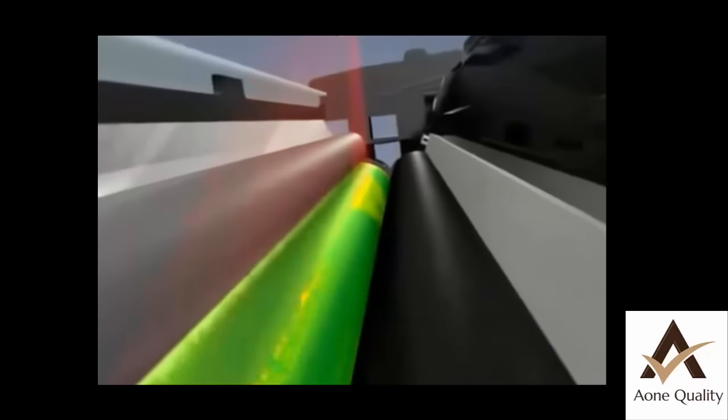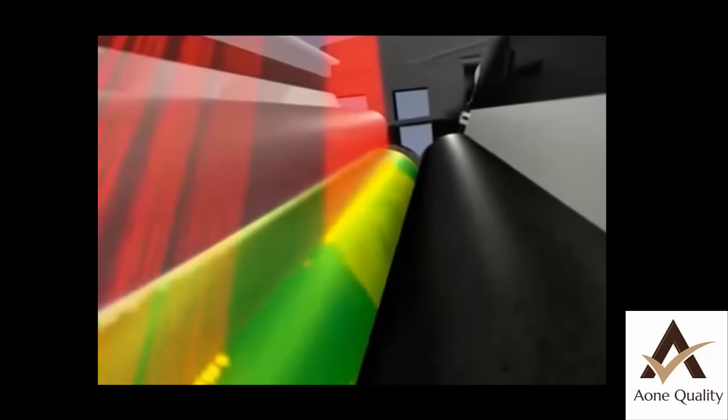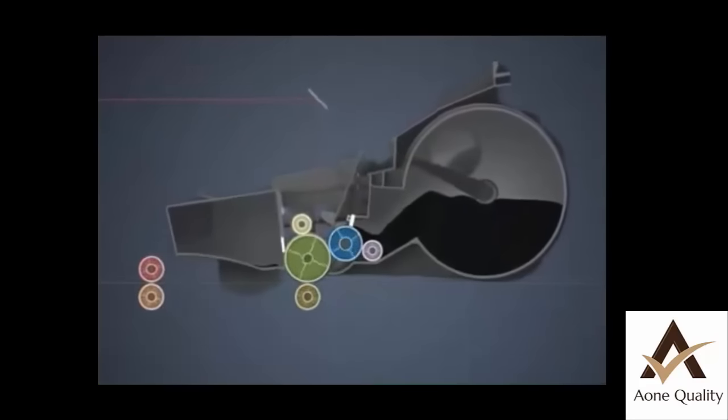The laser strikes the photoconductor drum up to 65 million times a second, creating a chemical reaction that discharges the areas that are negatively charged, resulting in an electrostatic image. Next, the image is developed.